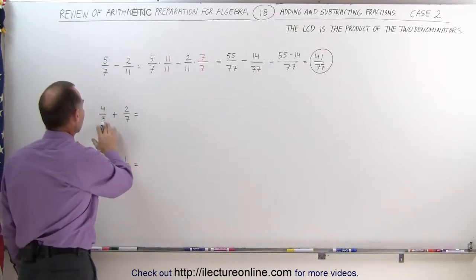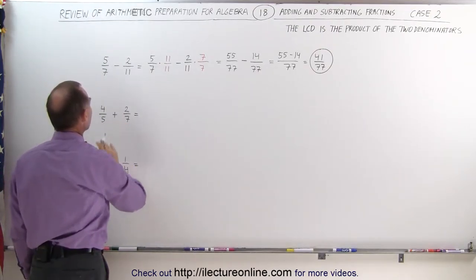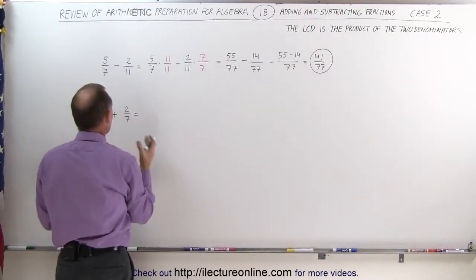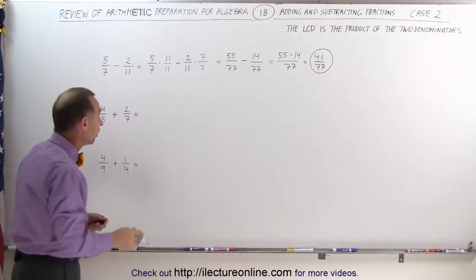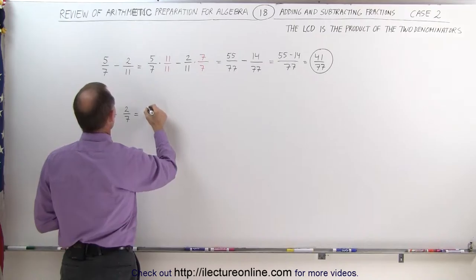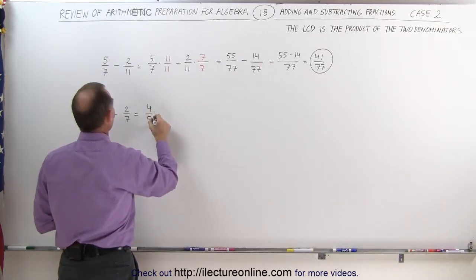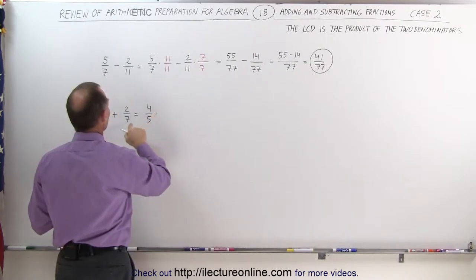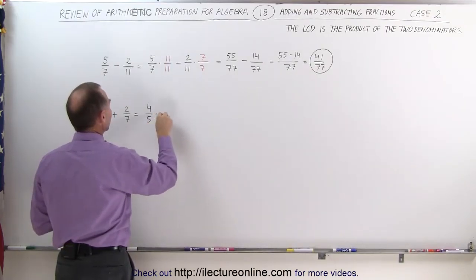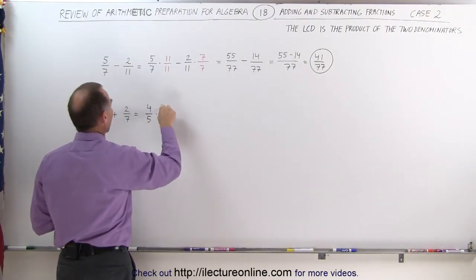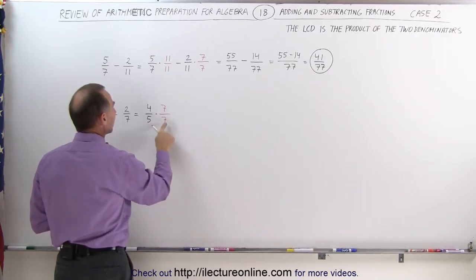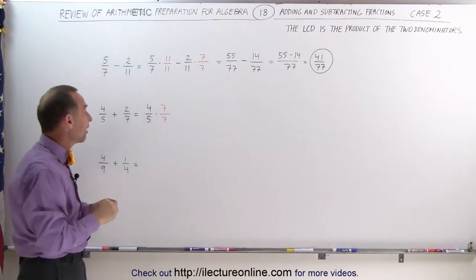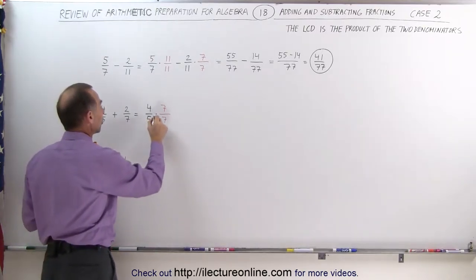We'll do the same for the next example. Notice that five and seven are both prime numbers, so we need to find the common denominator, which will be the product of the two denominators. To add the two fractions, we take the first fraction, four over five, and multiply it by the denominator of the second fraction. Whatever we multiply the denominator by, we have to do the same for the numerator, or we change the value of the fraction.